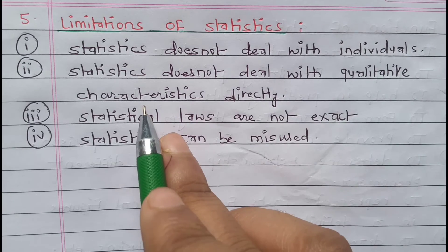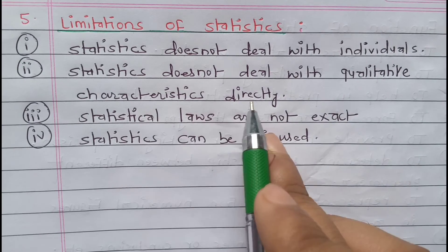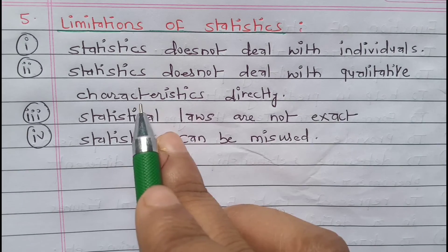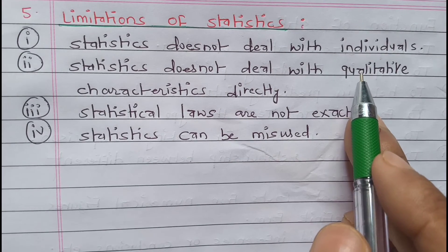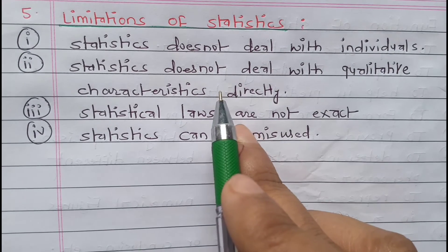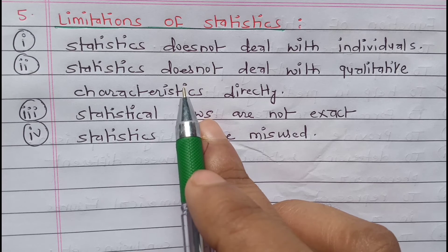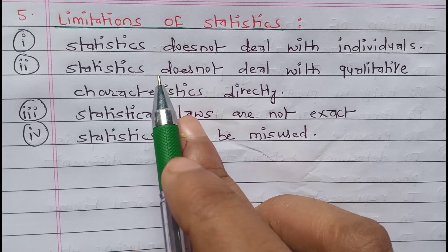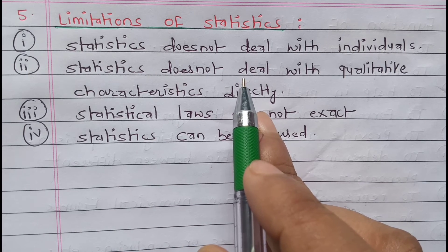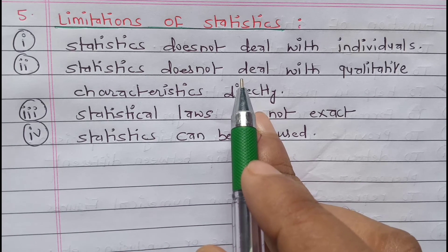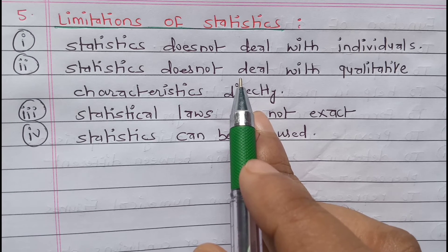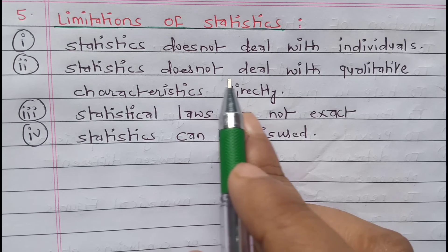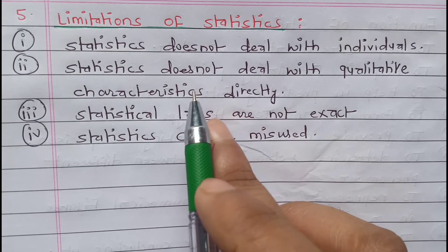Another limitation is that statistics does not deal with qualitative characteristics directly. Qualitative characteristics such as honesty, knowledge, and beauty cannot be measured by statistics. Statistics does not deal with how much beauty, knowledge, or honesty a person has.